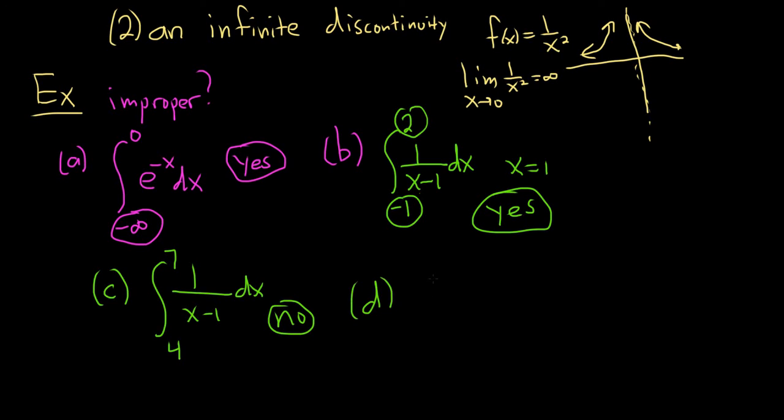D. Say we have 1 to infinity of sine of x dx. This would be an improper integral, so the answer would be yes. And the reason would be because of the infinity.